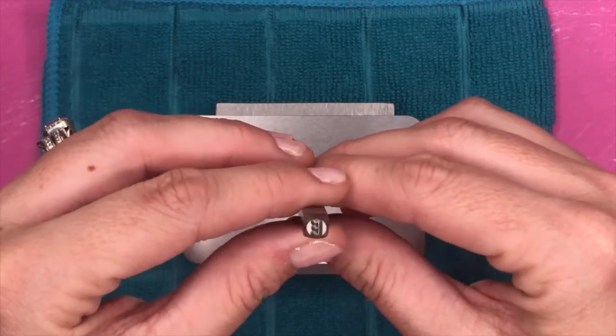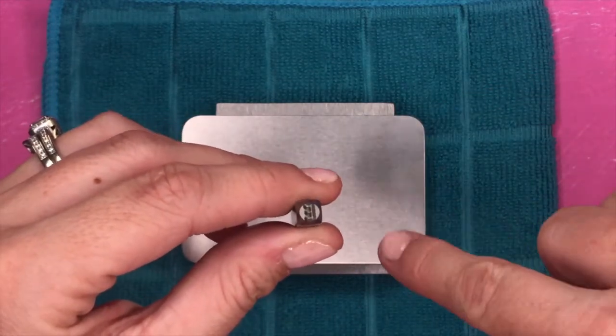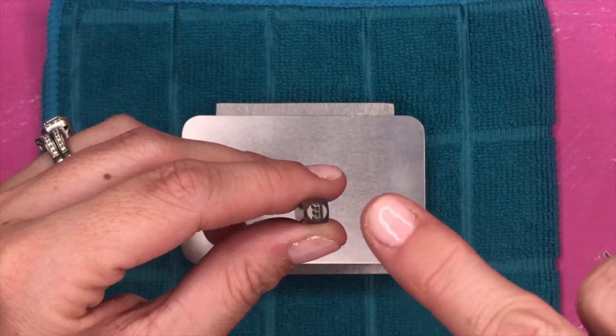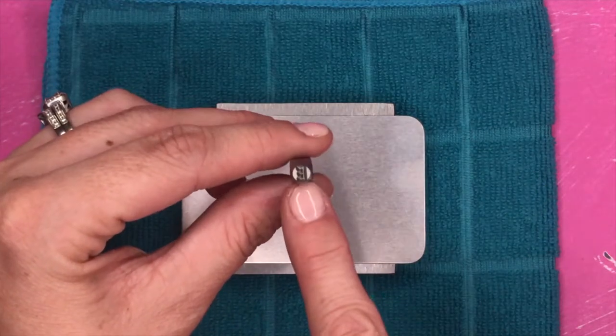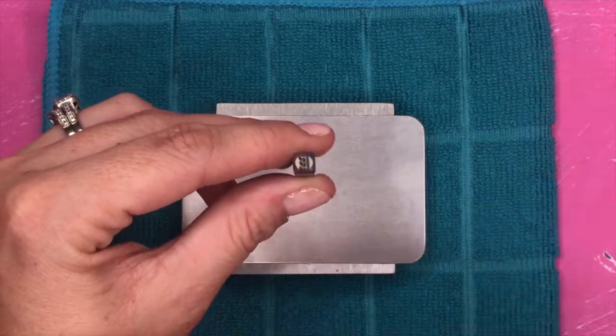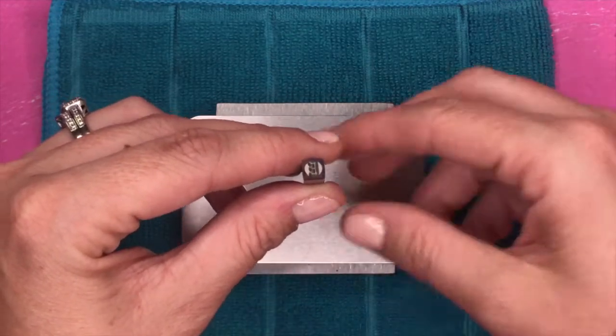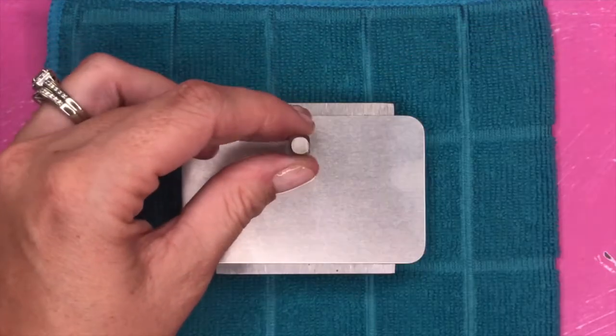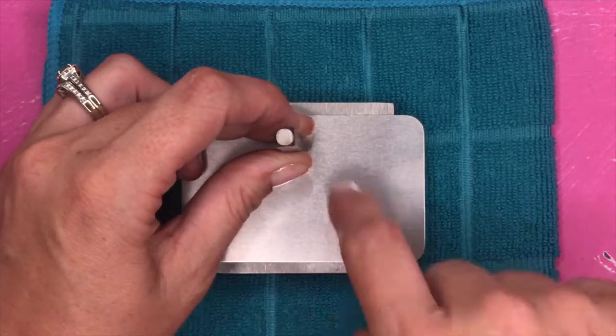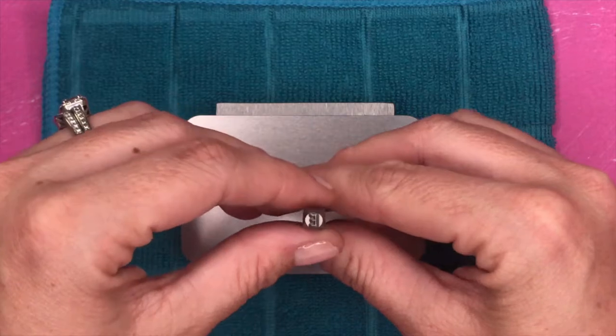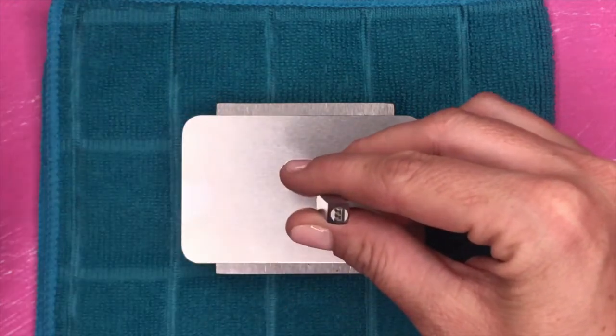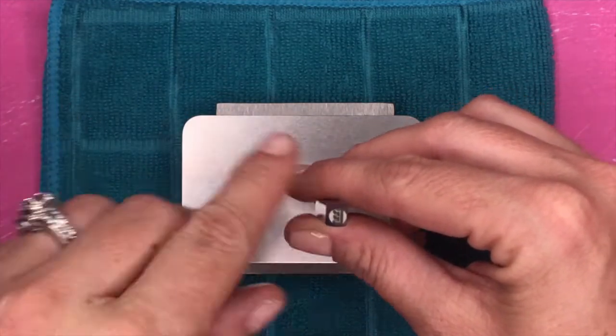I also want to bring your attention to the fact that these letters are going to be reversed. So when you look at this E, for example, it is facing the other direction, but it's because when you place it down onto your metal piece, it's going to impress the correct way. So keep in mind when you're looking for letters that they're going to be mirror image. They're going to be reversed.